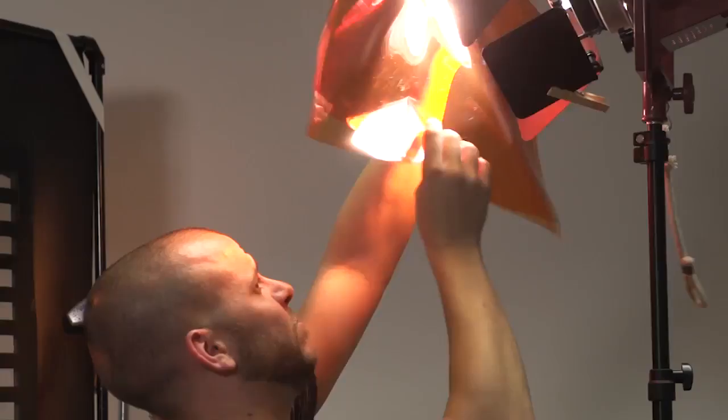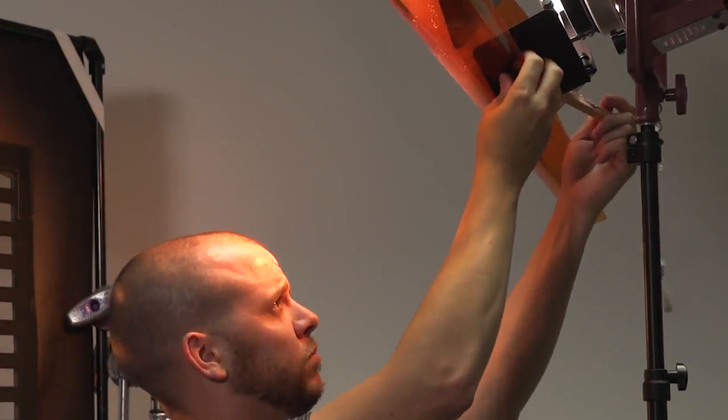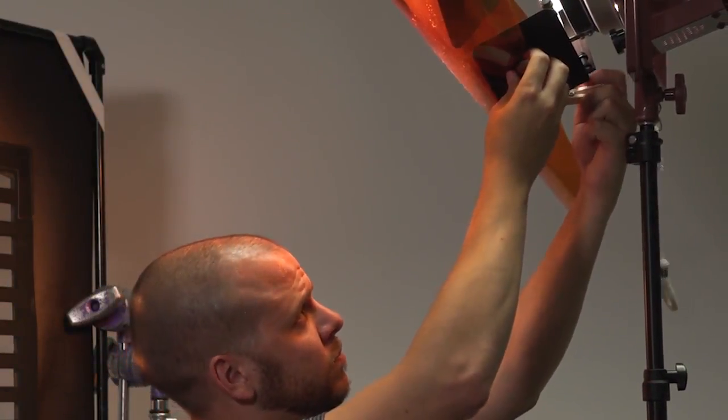Now that our shadows are looking more believable, we can add color to convey a mood or time of day. Let's add a warming gel from Digital Juice's Color Correction Gel Kit to make it feel like morning.